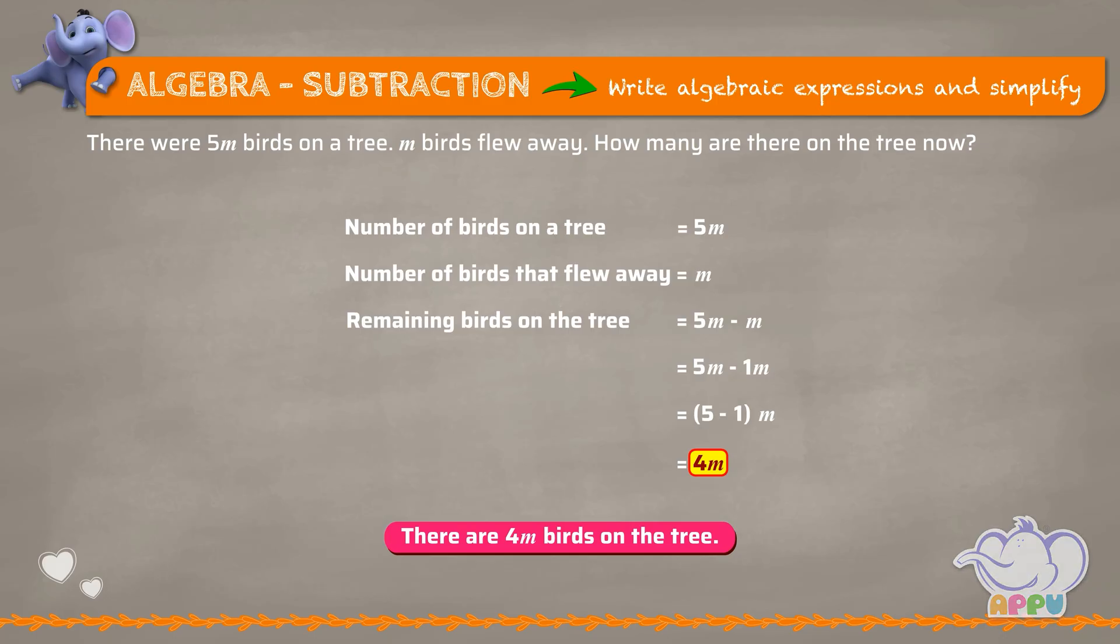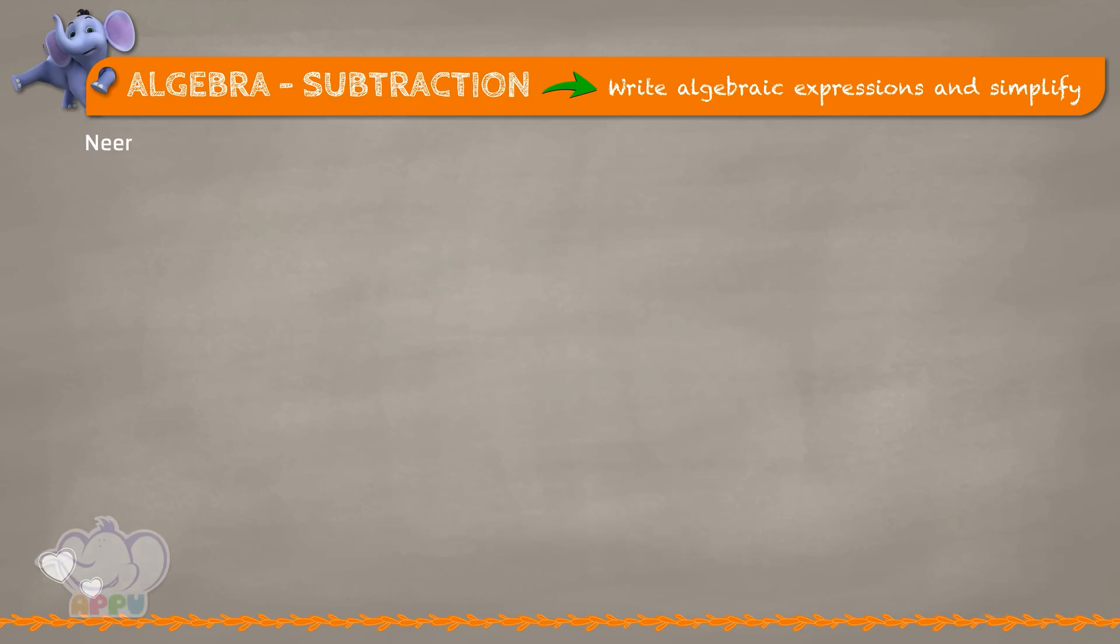Nina had 7X amount with her. She spent 2X to buy fruits. How much amount is with her now?